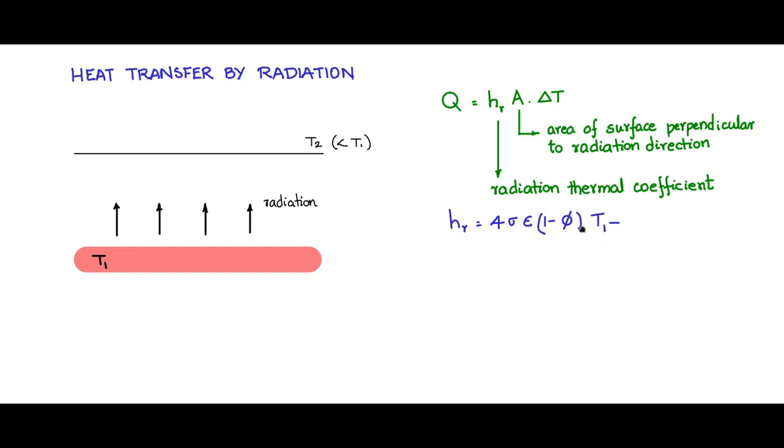Where sigma is the Boltzmann constant, which has a value of 5.67 times 10 to the power of minus 8. Epsilon is the emittance.